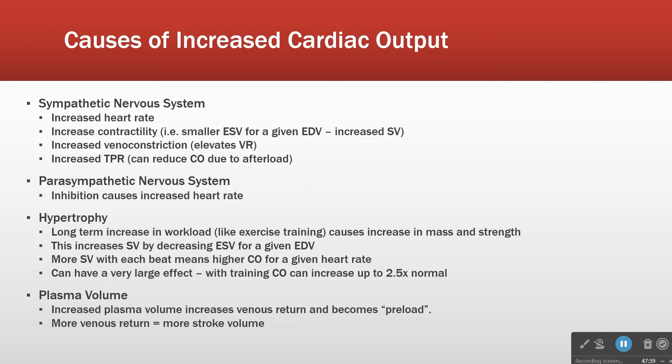Increased total peripheral resistance will typically increase cardiac output but can also reduce it. If I lower TPR, for the same blood pressure I'll increase cardiac output. But if I elevate TPR, at some point cardiac output has to go down, otherwise blood pressure would go up. So TPR's relationship is more complicated than a simple increase.